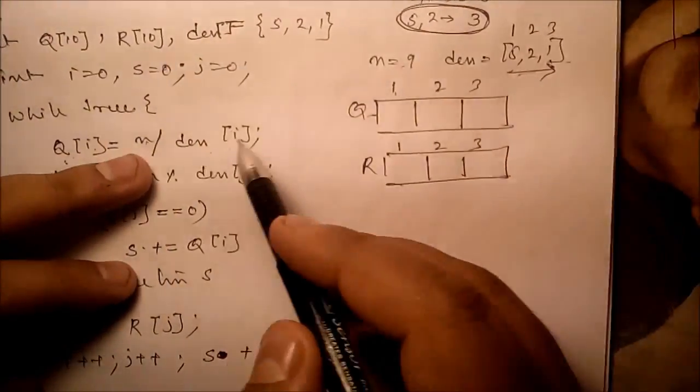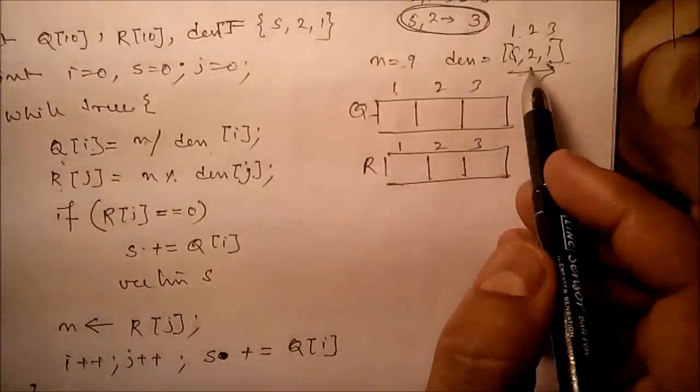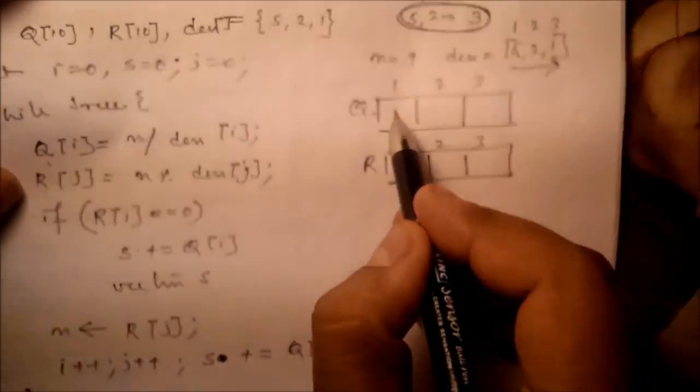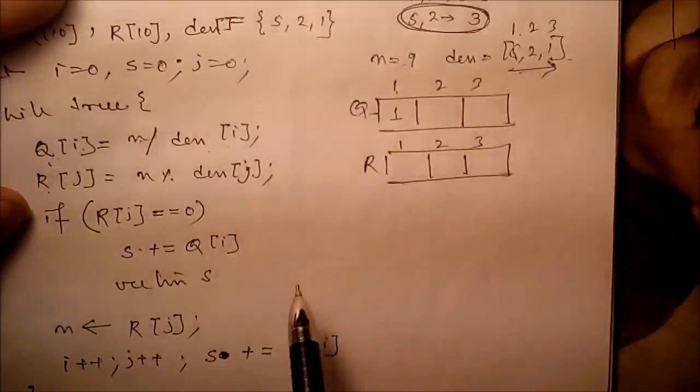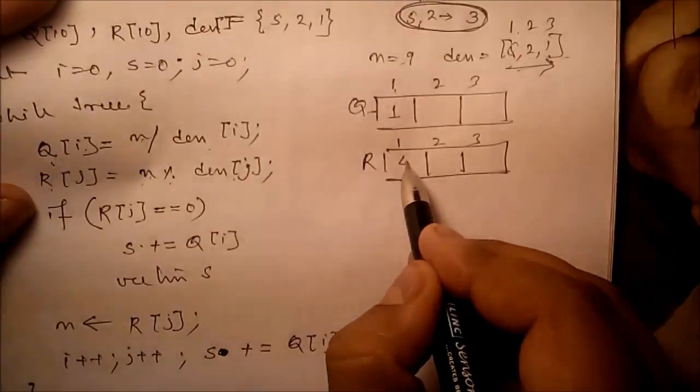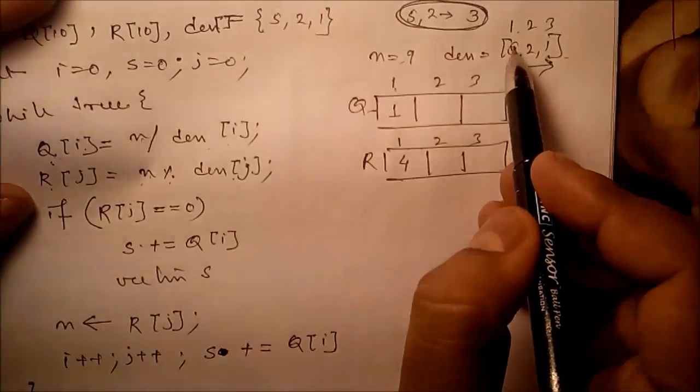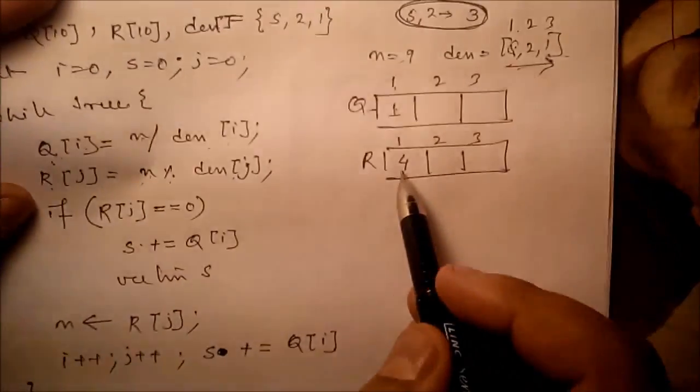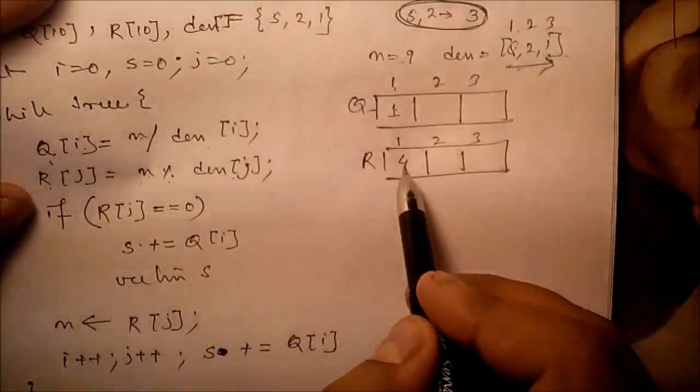So n is 9. 9 divided by d[1], which is 5. So 9 divided by 5 is 1, so keep 1 here. N modulo 5, 9 modulo 5, the answer will be 4. That means we have to return 1 five rupee coin, and remaining we have to return 4 rupees.